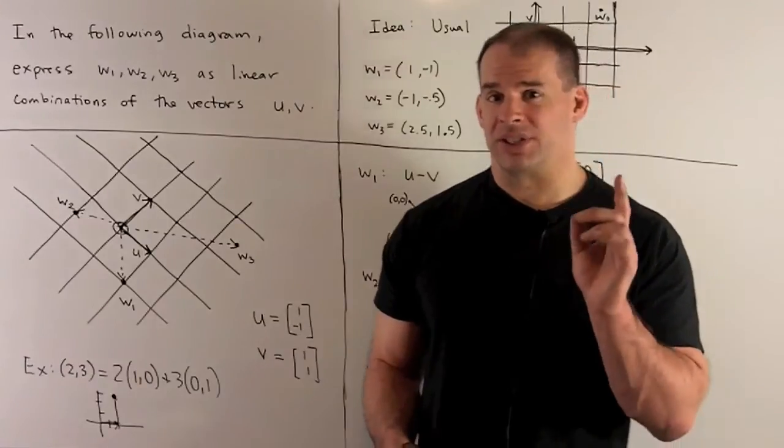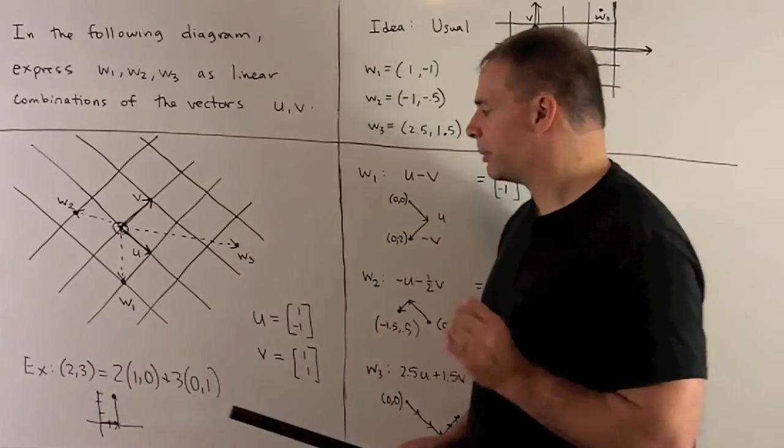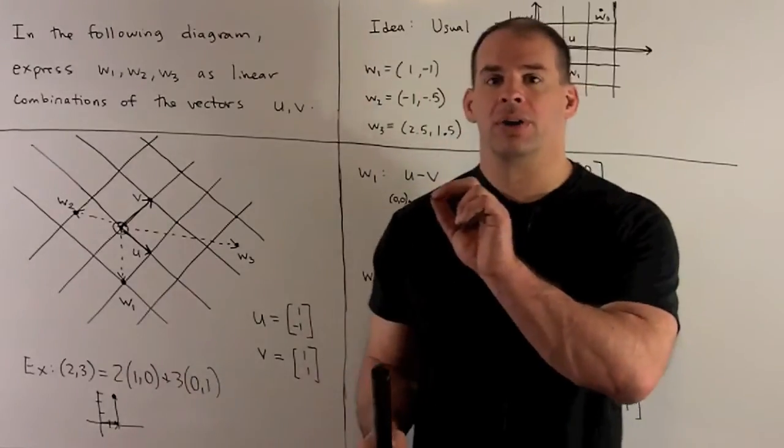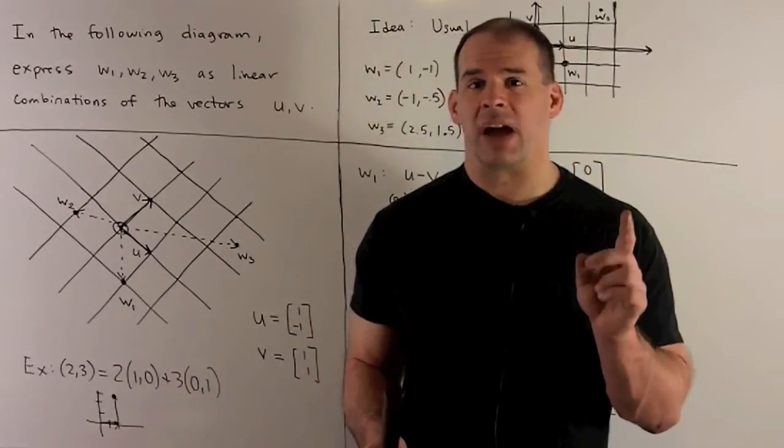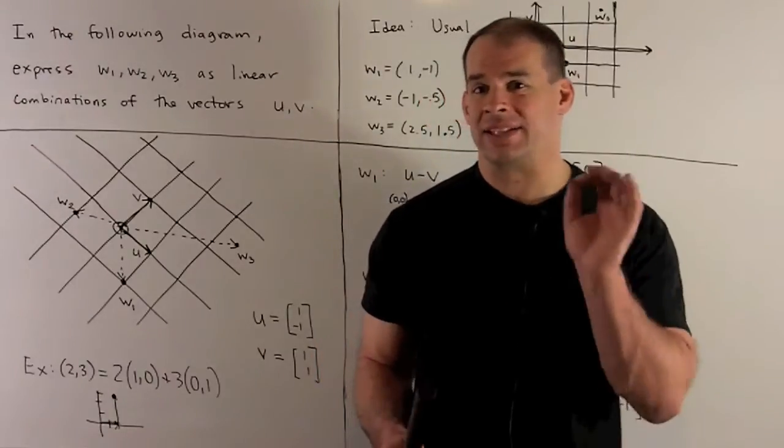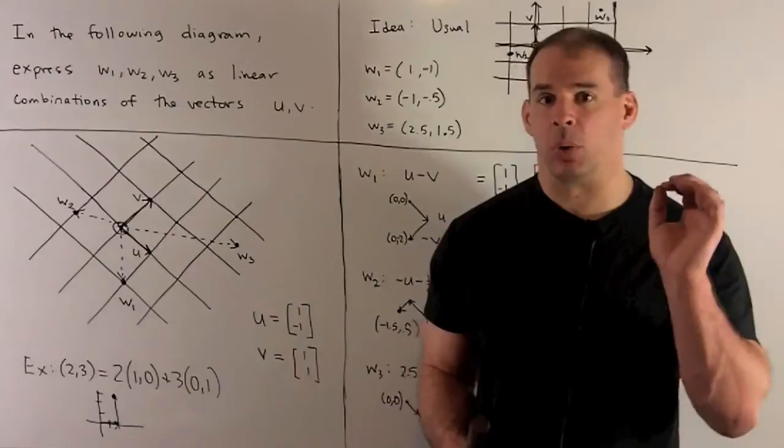That's using a linear combination. If we take the standard basis for the plane, this will be the vectors (1, 0) and (0, 1). Then if I go over 2 in x, that's the vector 2 times (1, 0). If we go up 3 in y, that's adding the vector 3 times (0, 1).